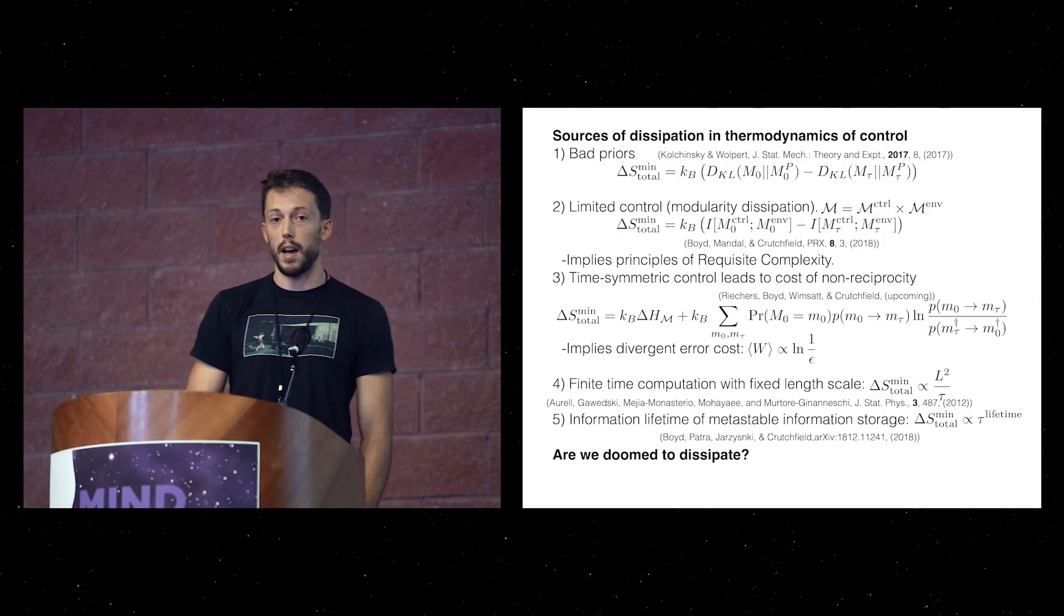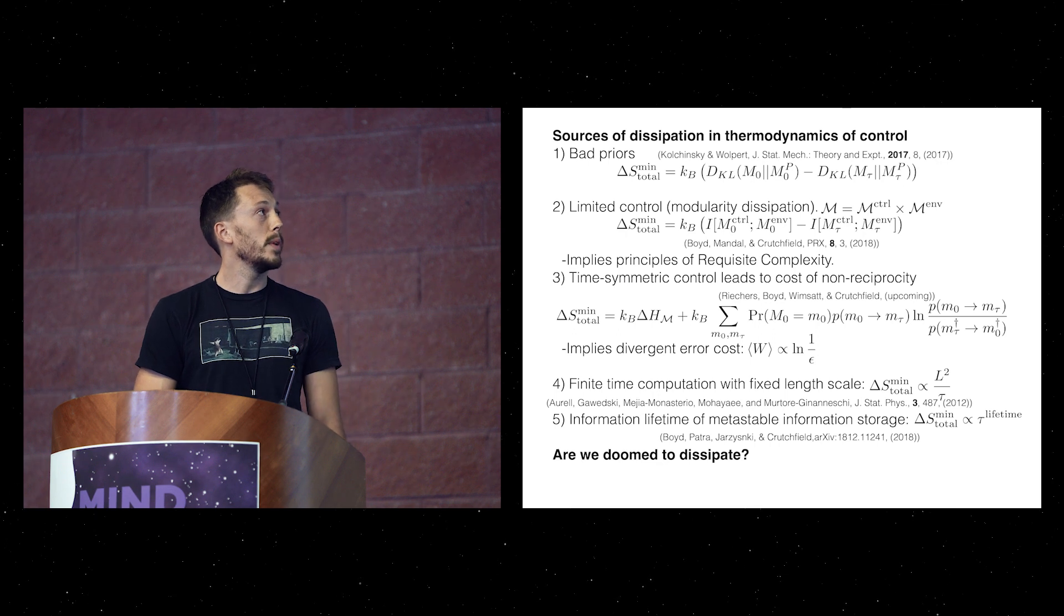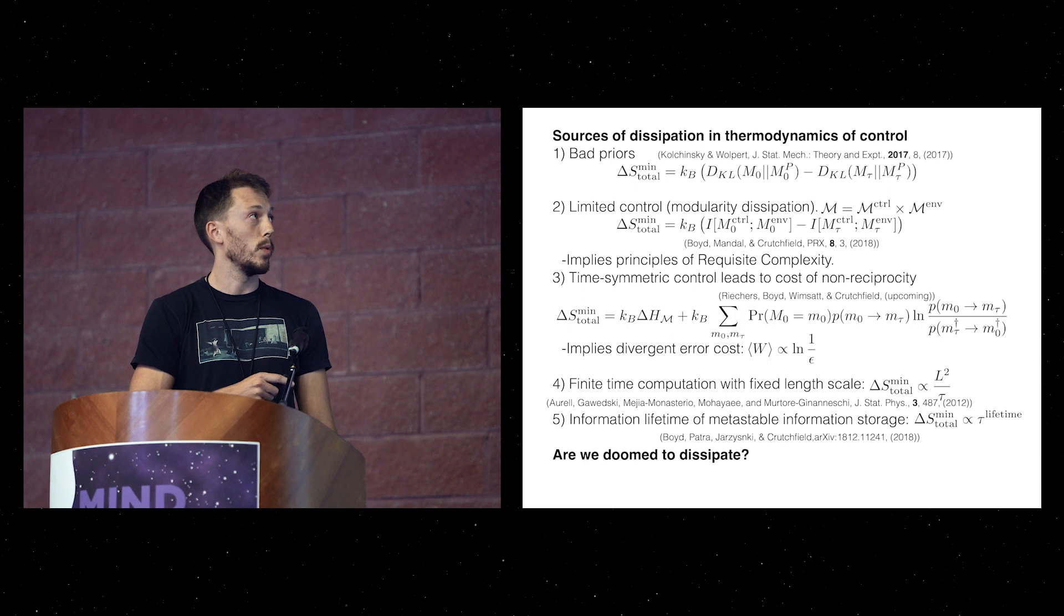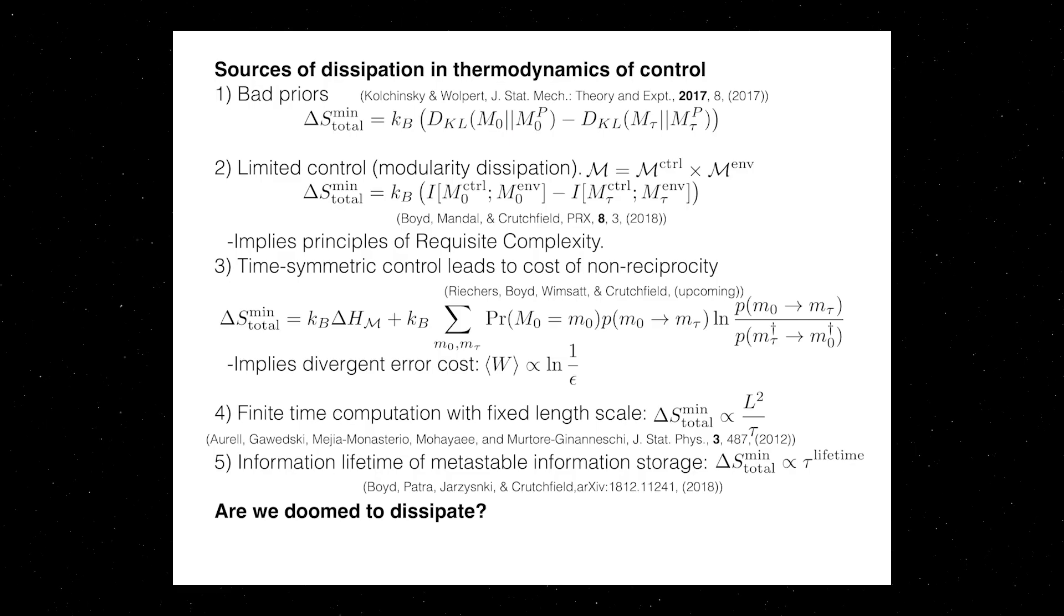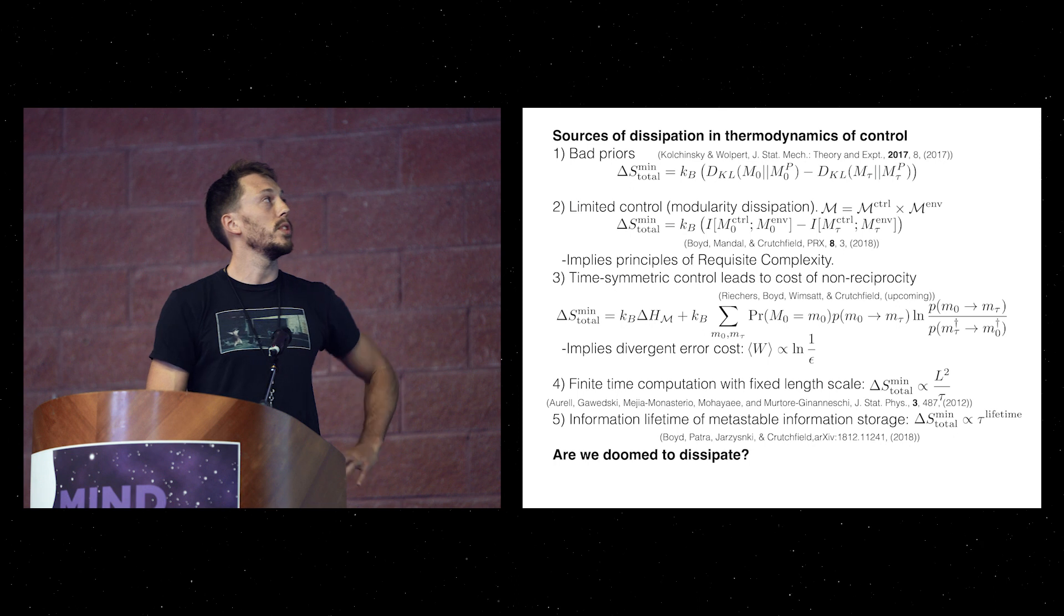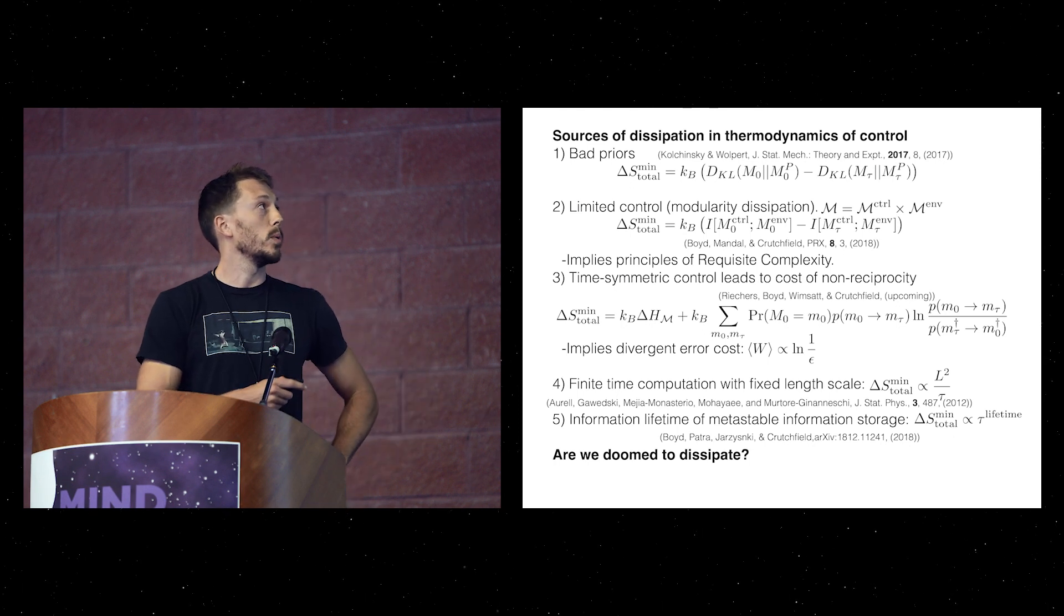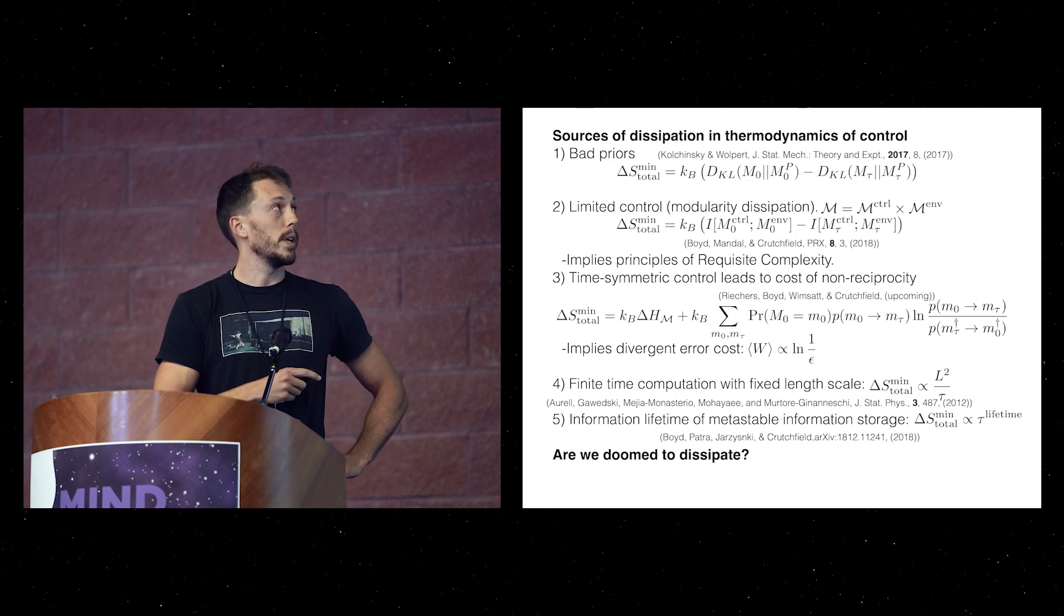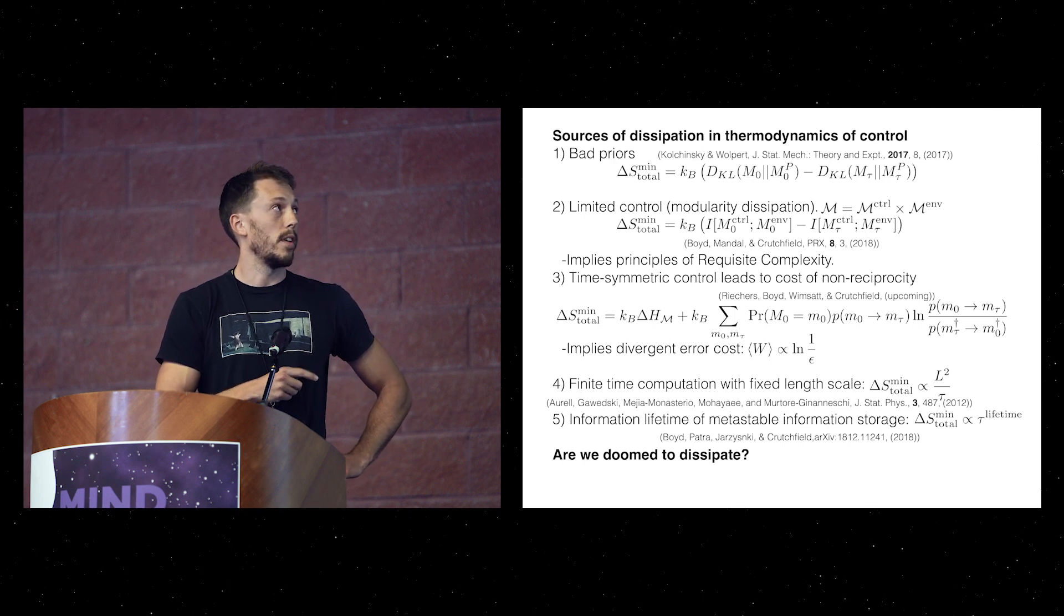Similarly, if you have a modular system in which you only have control of a limited piece of your informational variable—so this is the only piece that you control right here, and the rest is effectively decoupled from you—then you find that the minimum dissipation associated with the computation is equal to the reduction in the correlations between your controlled system and its environment.